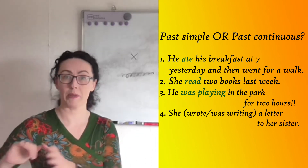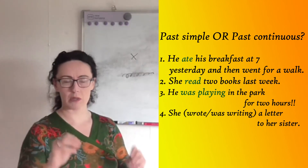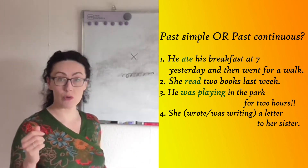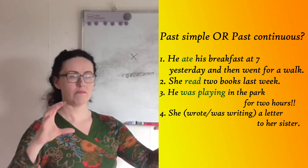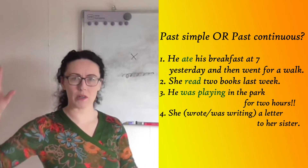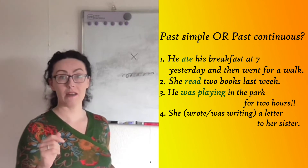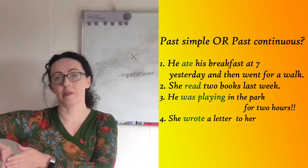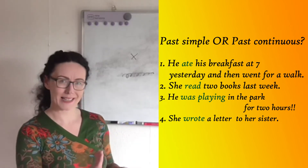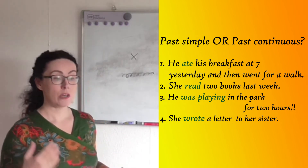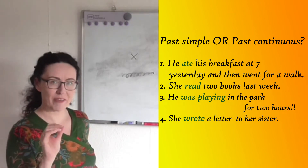For sentence four: 'She wrote/was writing a letter to her sister.' As that sentence sits just by itself, I think the best option is 'she wrote' — it's something completed, and presumably the letter was finished. That's what the verb reflects for us: 'She wrote a letter to her sister.' It's done.